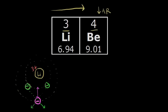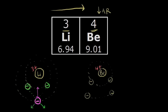Now let's draw the atom for beryllium, atomic number 4. With an atomic number of 4, there are 4 protons in the nucleus — a charge of 4+ in our nucleus. We have 4 electrons: 2 electrons in the inner orbital at the first energy level, and 2 electrons in the outer orbital at the second energy level. This is just a rough approximation of what beryllium might look like.